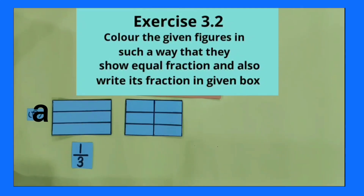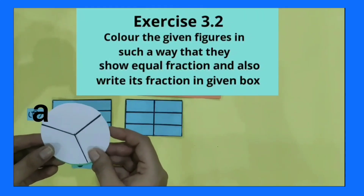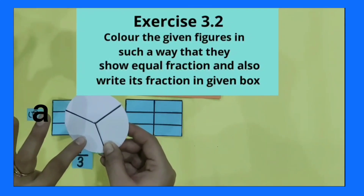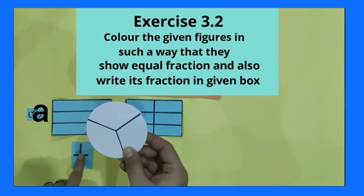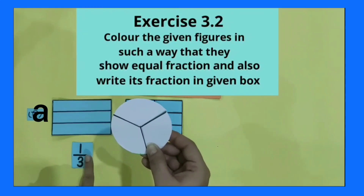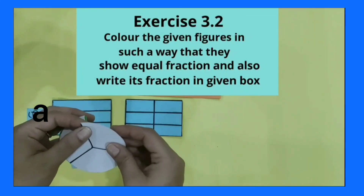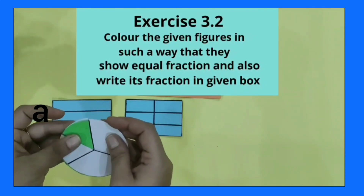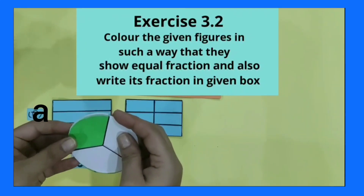So one is our numerator. I have a circular shape divided into three equal parts. I have to color one part out of three equal parts. So I colored one part out of three equal parts of this shape.